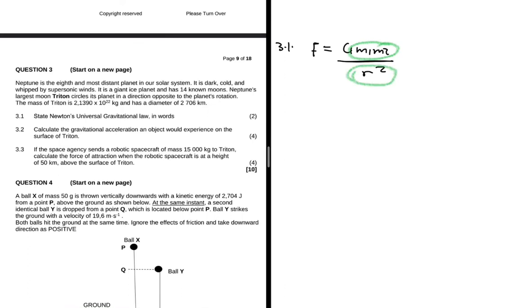Now we can go to 3.2. Question 3.2 says calculate the gravitational acceleration an object will experience on the surface of Triton. So we want the gravitational acceleration. What is the formula of the gravitational acceleration?